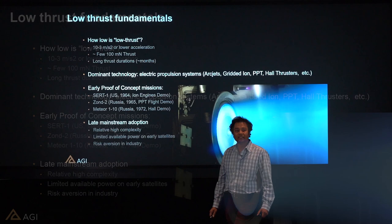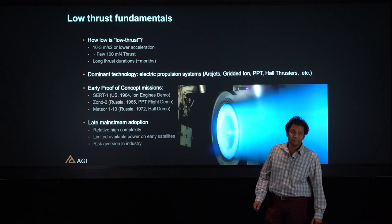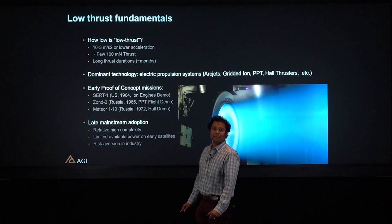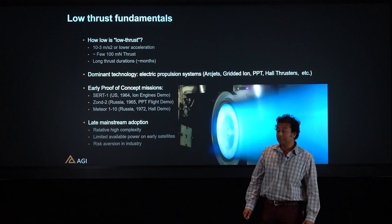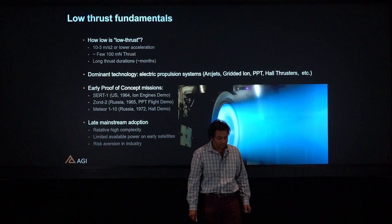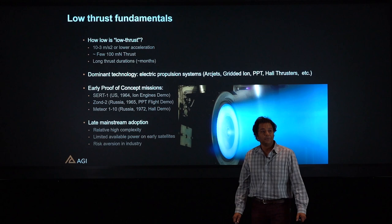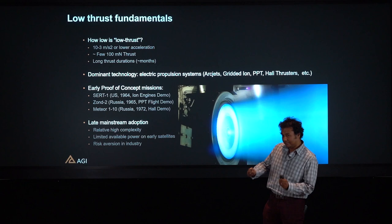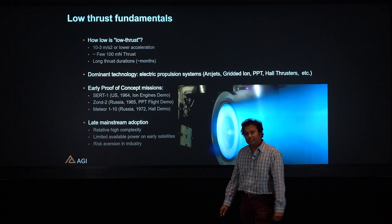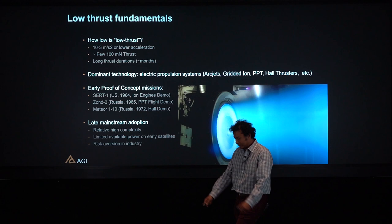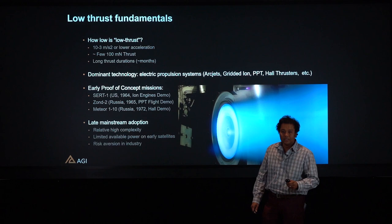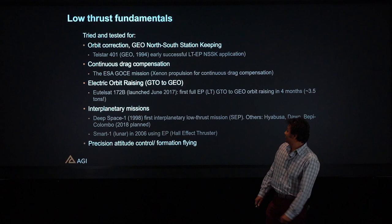There were some early proof-of-concept missions that flew back in the 60s and early 70s. One of the earliest was the ACRT-US mission, and there were a couple of Soviet missions back in the day — they were all demo missions. Low-Thrust propulsion systems were not that popular in the 70s and 80s, but starting in the early 90s things picked up again. Low-Thrust systems have higher complexity compared to traditional chemical propulsion systems, and it's only recently that engineers have figured out the challenges of constructing a Low-Thrust propulsion system on a spacecraft.